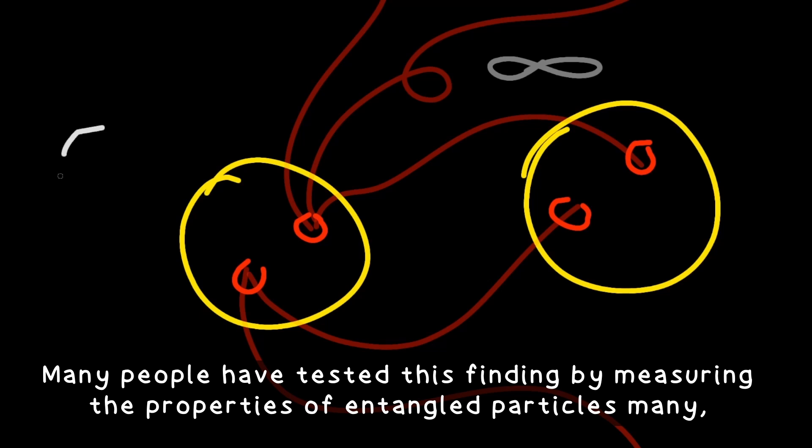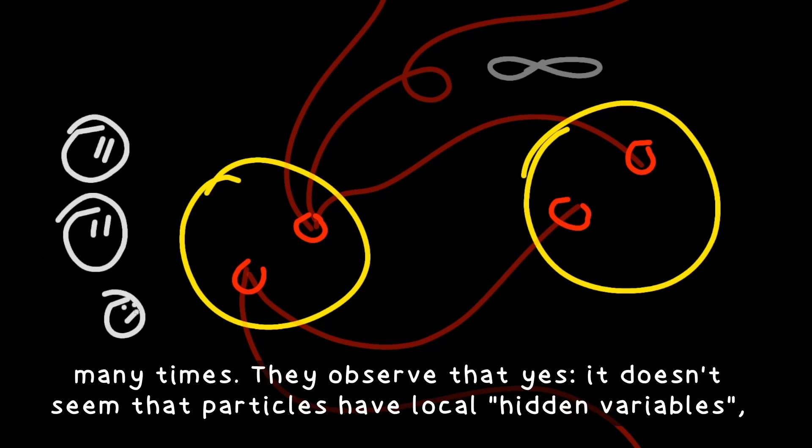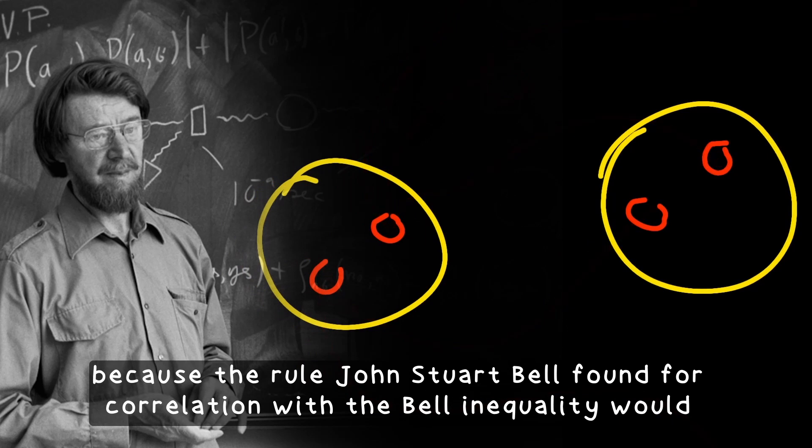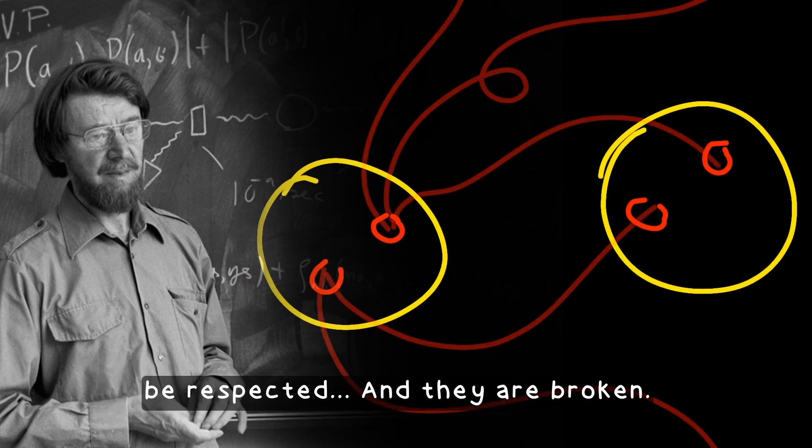Many people have tested this finding by measuring the properties of the entangled particles many, many times. They observe that yes, it doesn't seem that the particles have local hidden variables because the rule John Stuart Bell found for correlation with the Bell inequality would be respected and it is broken.